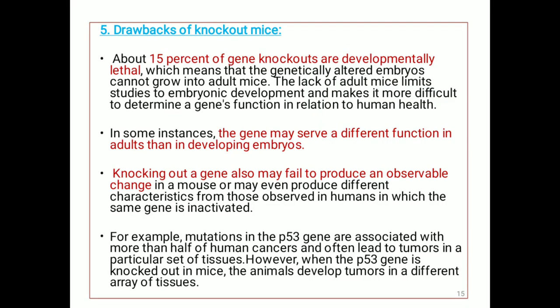Drawbacks of knockout mice: About 15% of gene knockouts are developmentally lethal, meaning the genetically altered embryo cannot grow into adult mice. The lack of adult mice limits studies to embryonic development and makes it more difficult to determine a gene's function in relation to human health. In some instances, the gene may serve a different function in adults than in developing embryos. Knocking out a gene may also fail to produce an observable change in a mouse, or may produce different characteristics from those observed in humans in which the same gene is inactivated. For example, mutations in the p53 gene are associated with more than half of human cancers and often lead to tumors in a particular set of tissues; however, when p53 is knocked out in mice, the animal develops tumors in a different array of tissues. Despite these drawbacks, knockout mice have proven highly efficient for studying gene function and have aided advances in the treatment and prevention of human diseases.